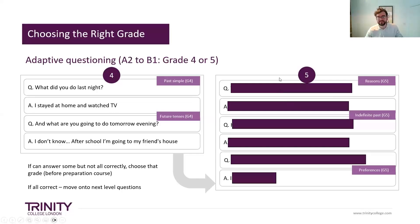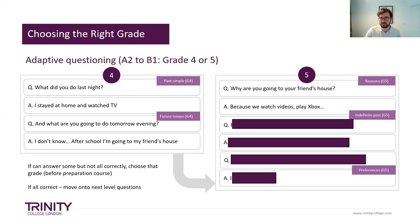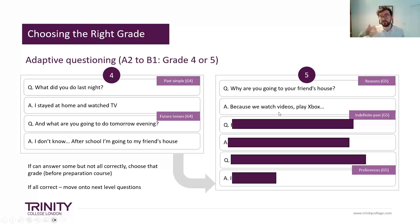'Why' is a classic grade five question — the examiner will often ask why for anything. So: 'Why are you going to your friend's house?' Notice there's a link back to what the candidate said — it is a conversation, not just a Q and A. The examiner listens and tries to form an authentic interactive experience. Candidate says: 'Because we watch videos, play Xbox.' They're doing great. At grade five there's also indefinite past — likely present perfect — talking about past experiences. 'How many times have you been there this week?' Also quantifying: 'I went once this week.'